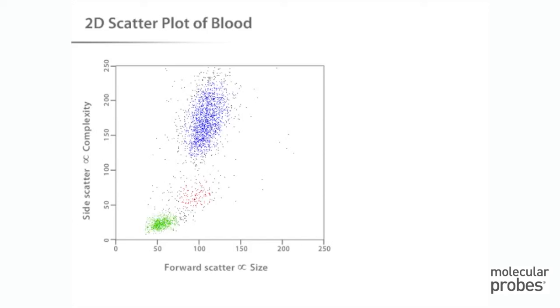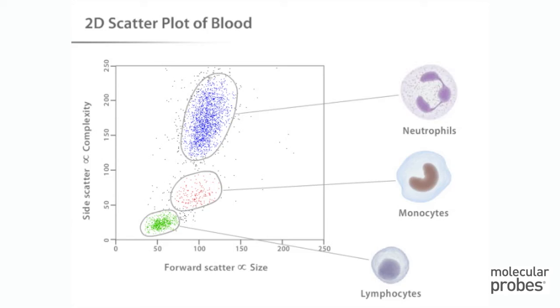The populations that emerge include lymphocytes, which are small cells possessing low internal complexity, monocytes, which are medium-sized cells with slightly more internal complexity, and neutrophils and other granulocytes, which are large cells that have a lot of internal complexity. This multiparametric analysis is the real power of flow cytometry.